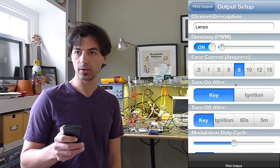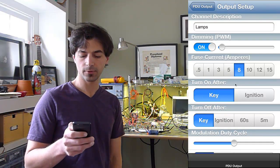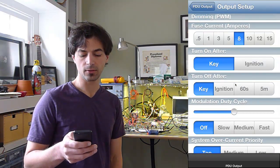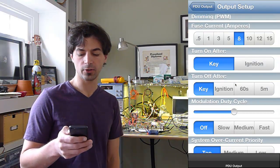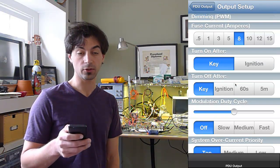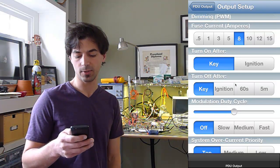You can set the fuse current in amps somewhere between 500 milliamps and 15 amps. You can tell the circuit to turn on after you turn on the key or after you turn on the ignition, tell it to turn off after you turn off the key, the ignition, or after a delay of either one minute or five minutes.